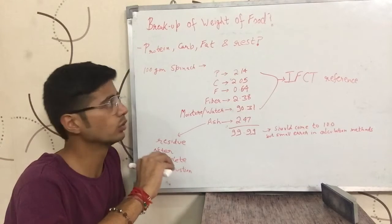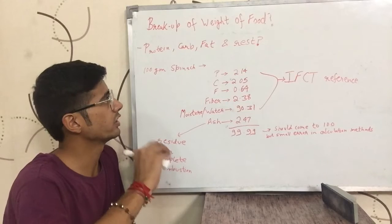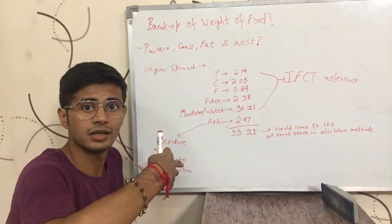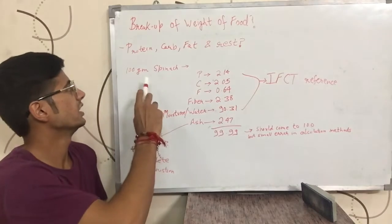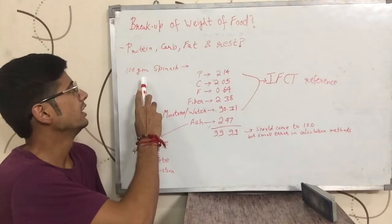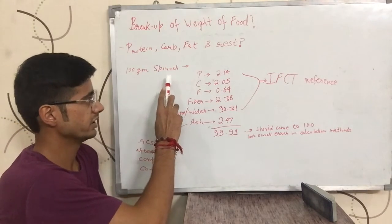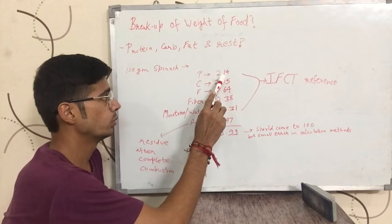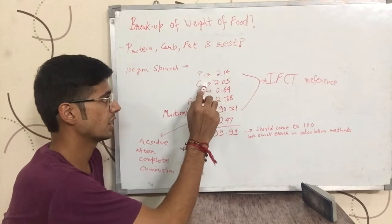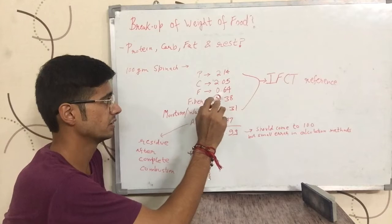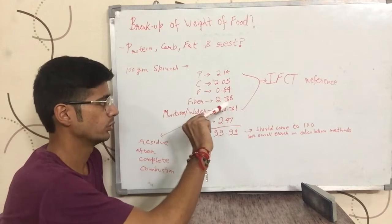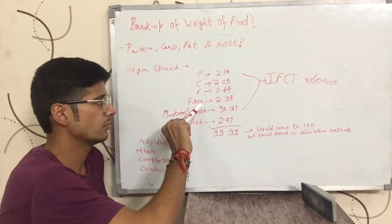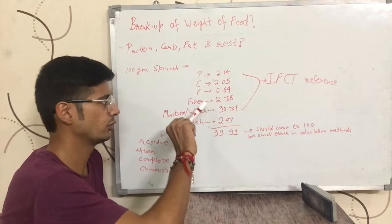If food does not have weight only from protein, carbohydrates and fats, then where does the rest of the weight come from? We will take an example of 100 grams spinach. 100 grams of spinach has protein 2.14 grams, carbohydrate 2.05 grams, fat 0.64 grams.